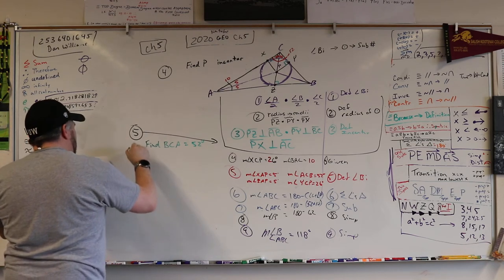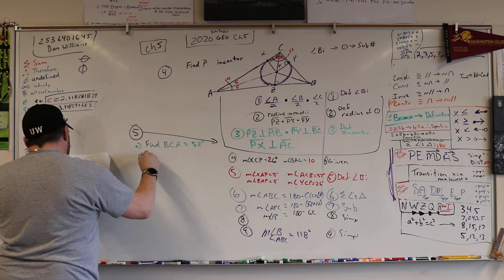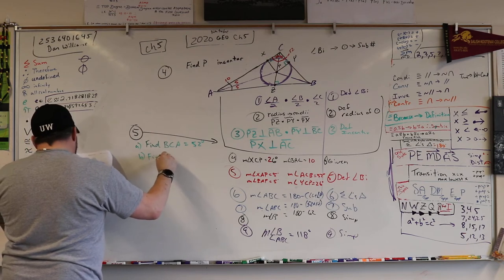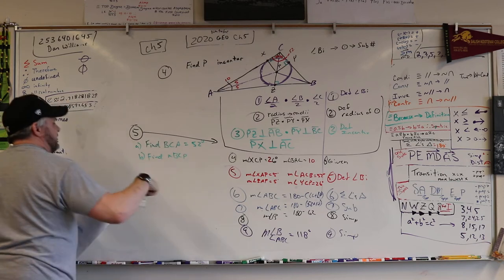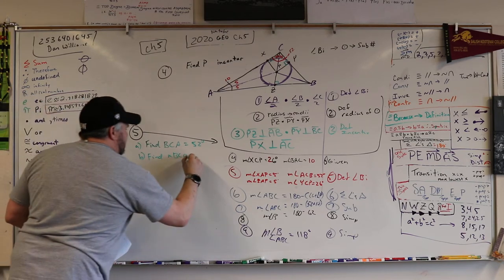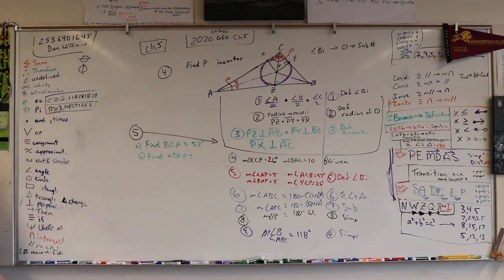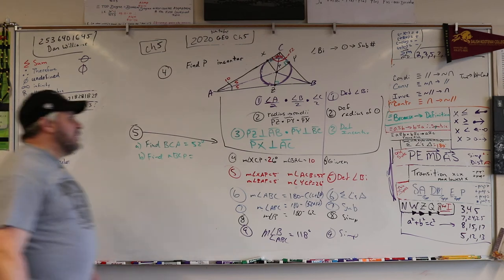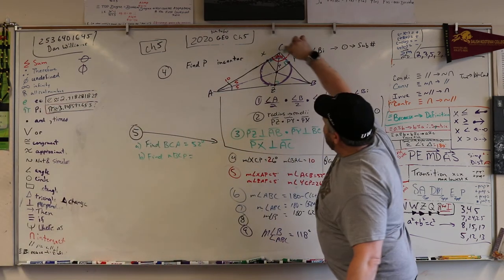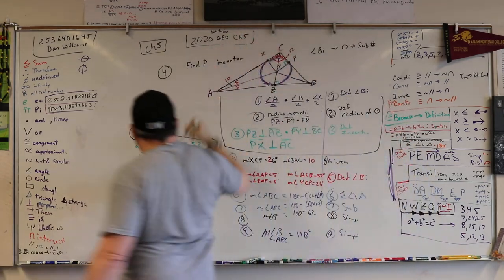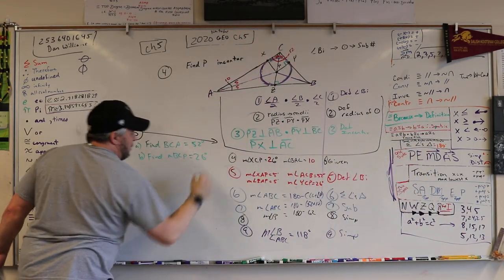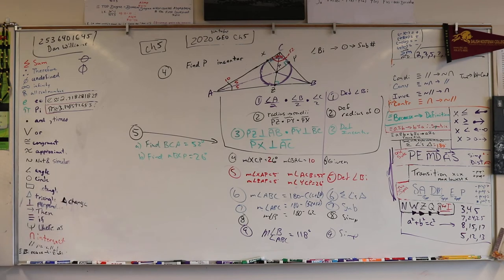And then it says find, so that's part A, part B says find measure of angle BCP. So what's angle BCP? Did we find that one? That was like the first one we found, this one. It was equal to the other side. So that was 26.